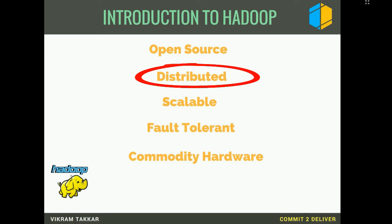Distributed processing means the Hadoop framework splits the data across different machines and processes them in parallel, which makes it time-efficient in handling large data sets. For example, if you have to write a thousand pages of content, would you prefer hiring the fastest writer, or hiring a hundred average writers? The hundred writers will complete the task faster.